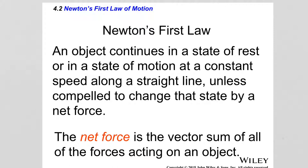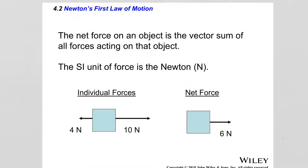In addition to the first law statement, the net force is defined as the vector sum of all forces acting on an object. For example, a block under the action of a 10 N force to the right and a 4 N force to the left: by vector addition, the resultant is a 6 N force to the right. That is the net force — the block behaves as if only that single 6 N force acts on it.